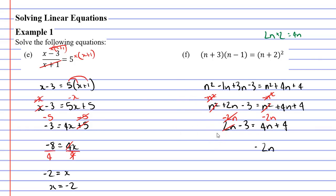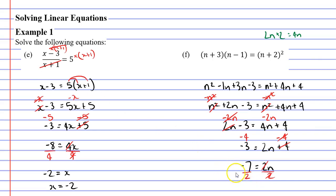4n minus 2n is 2n, so we have 2n plus 4, and negative 3 on the left. I'm going to subtract 4 to isolate the 2n, subtracting on both sides to cancel the plus 4. Negative 3 minus 4 gives us negative 7. Now I divide both terms by 2: negative 7 divided by 2 is negative 3.5, so n equals negative 3.5.